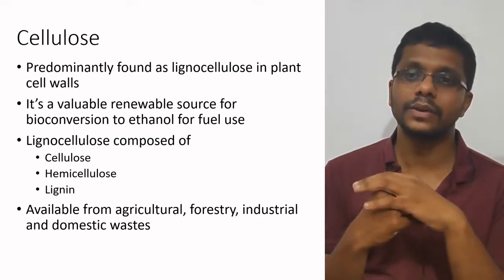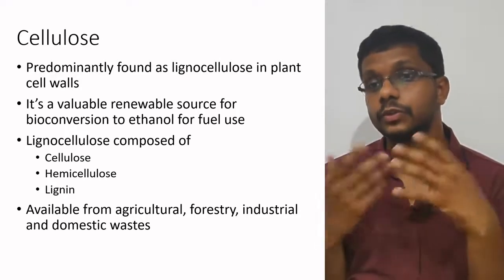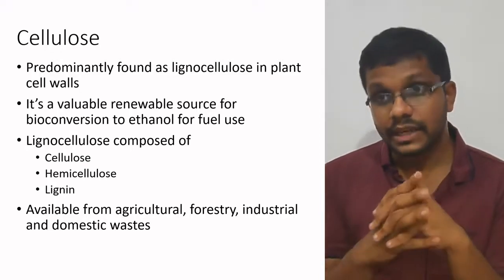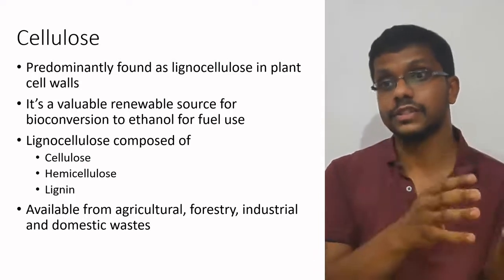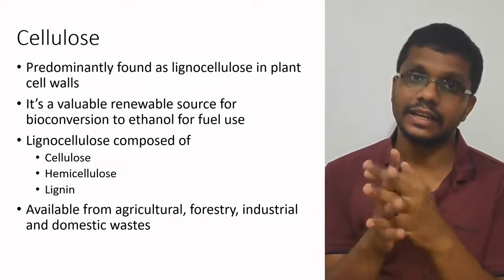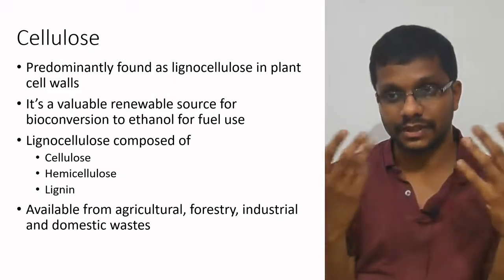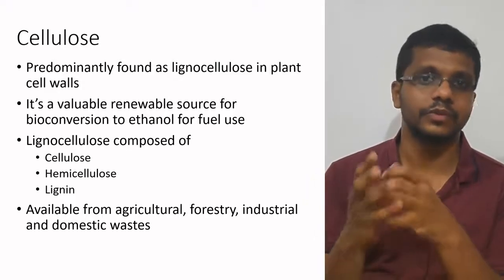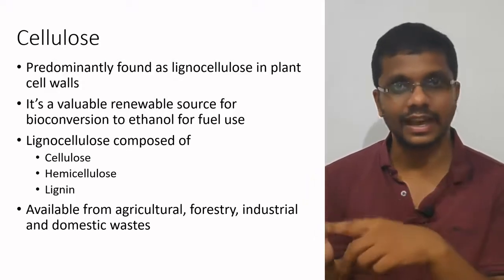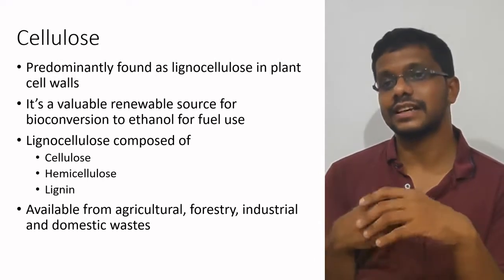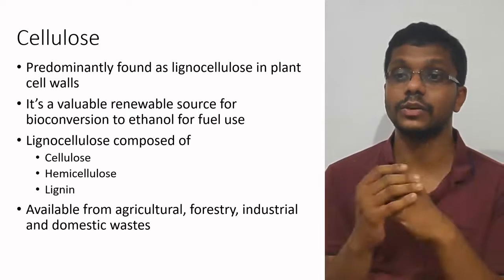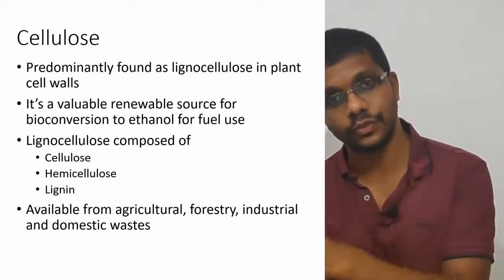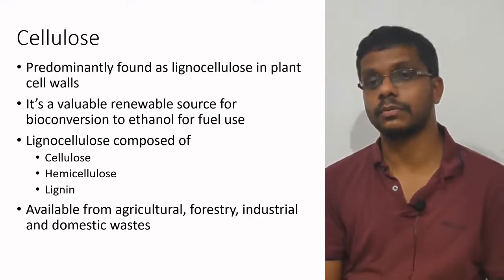In fermentation, most microorganisms won't use cellulose directly, so in order to use it we must convert it into a usable form such as glucose. If we could convert cellulose into glucose, it is a renewable biological resource that can be found widely in nature — in grass, wood, leaves, everywhere. A lot of research is ongoing on how to convert cellulose into glucose, and once we get the glucose we can convert it to fuel, making it more economical and environmentally friendly.